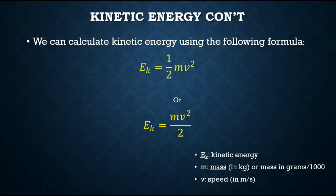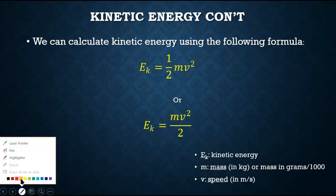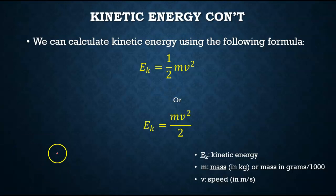We can actually calculate kinetic energy if we know the mass of the object and its velocity. We do that by taking one half of the mass times the velocity squared. EK stands for kinetic energy — the E stands for energy, and the K tells us it is kinetic. M stands for mass, and V stands for velocity.